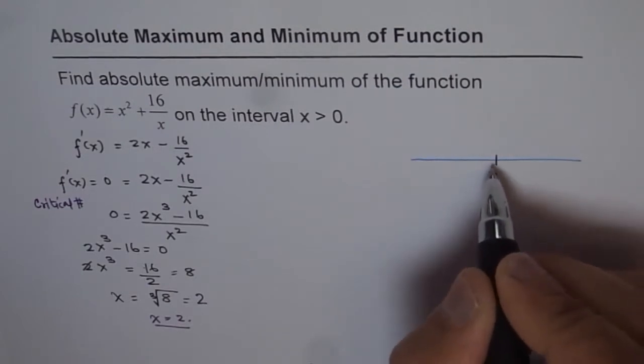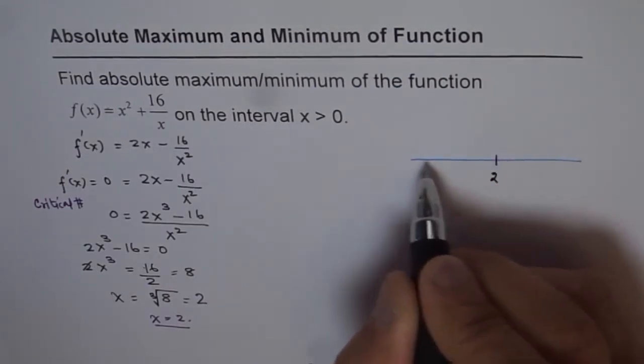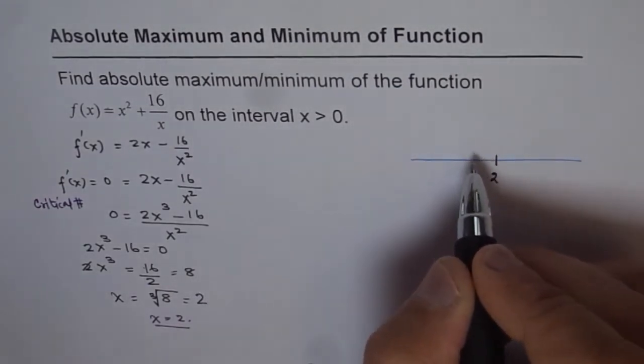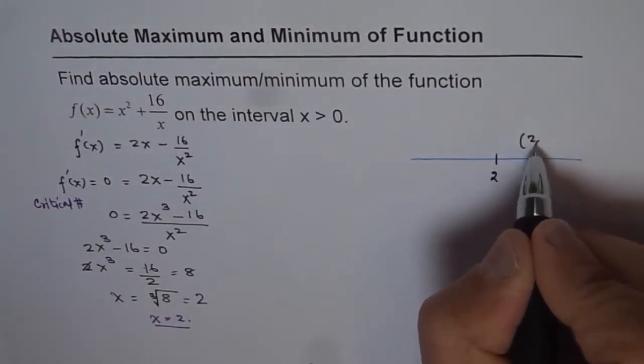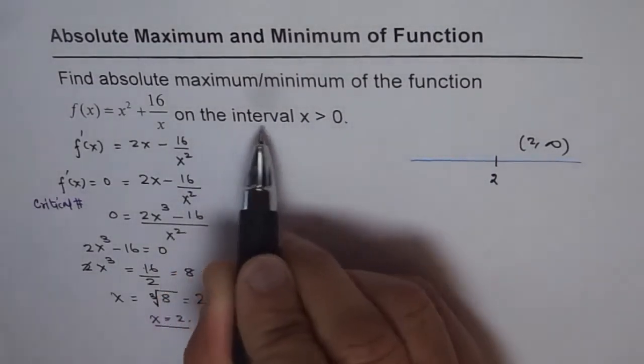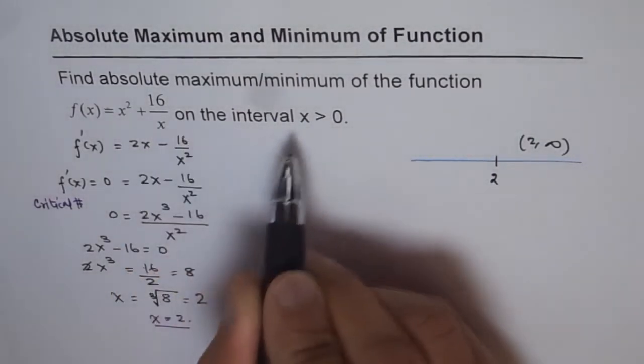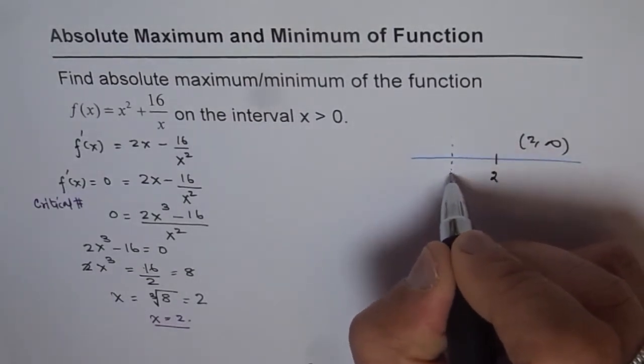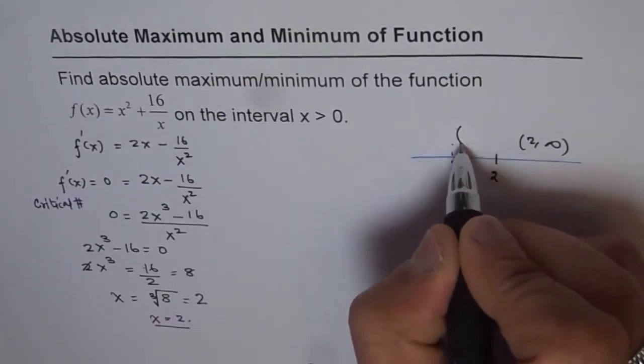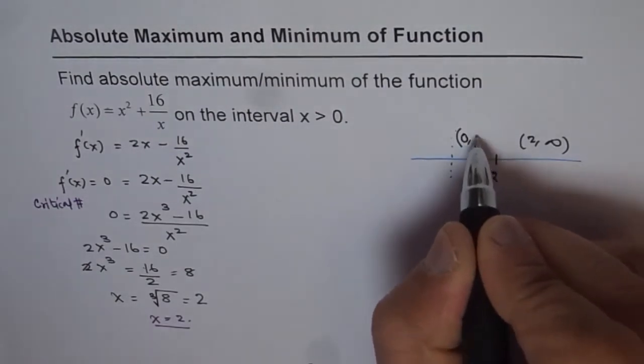This point divides the line into 2 intervals: one from -∞ to 2 and the other from 2 to ∞. Now note we have an interval for the function which is x > 0. So we'll consider only x > 0, so we have an interval here open from 0 till 2.